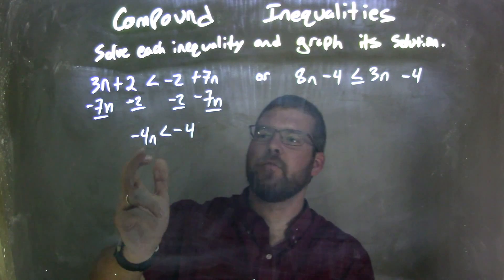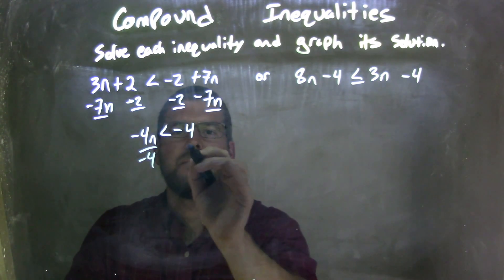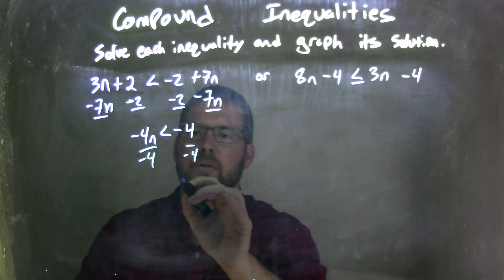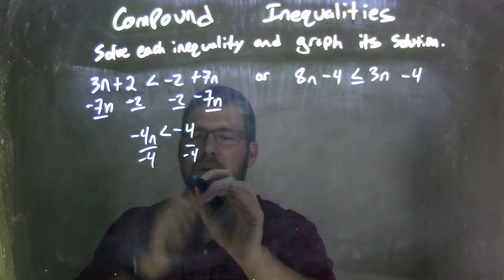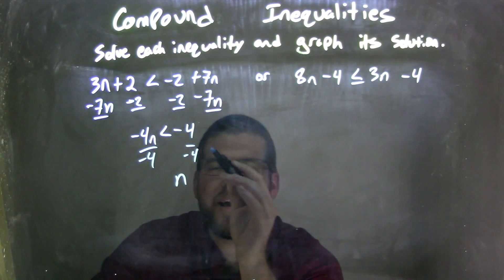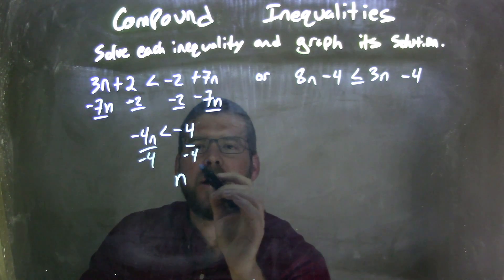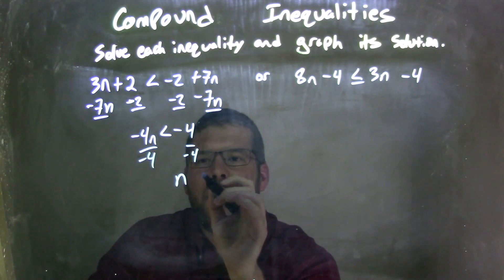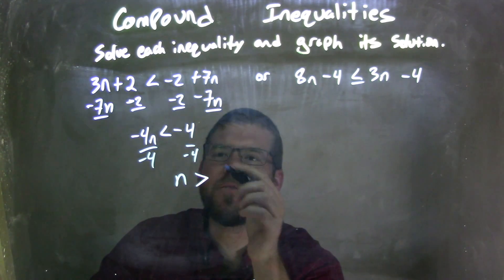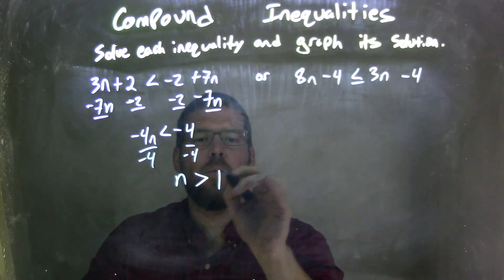I then need to divide both sides by negative 4. Since I divided by a negative number, that flips the inequality from a less than sign to a greater than sign, and negative 4 divided by negative 4 is positive 1. So now I have n is greater than 1.